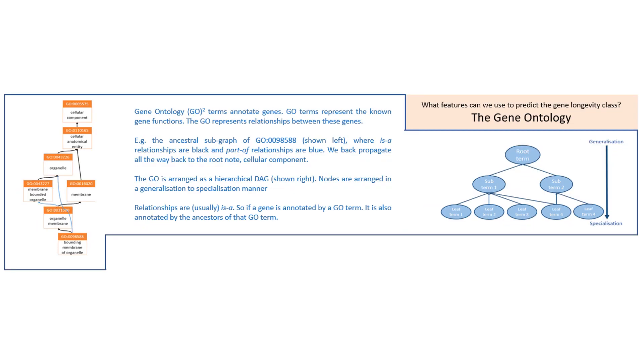This part of the poster considers what we can use to generate features for the genes. We use the gene ontology and define it as representing the unknown relationships between gene functions, where gene functions are nodes of a graph arranged as a hierarchical directed acyclic graph. On the left we have an example of a subgraph of gene ontology, which is an ancestral subgraph of the GO term representing the bounding membrane of an organelle, and on the right we draw out this idea of a hierarchical dag, where it's a range of generalization to specialization manner from the root term to the leaf terms.